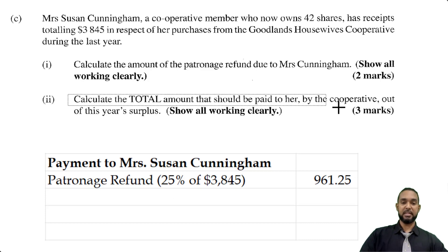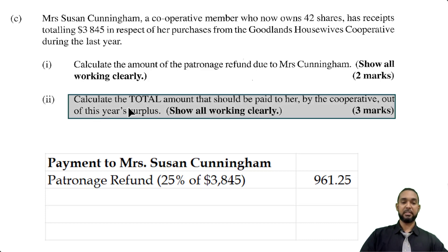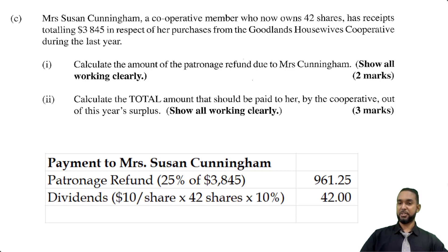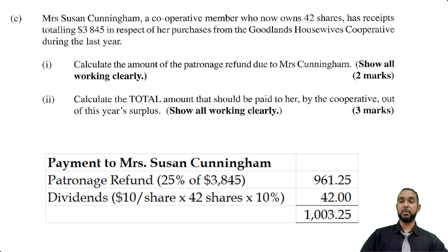The next part asks us to calculate the total amount that should be paid to her by the cooperative out of this year's surplus. The total amount is the sum of the patronage refund and her dividends. She owns 42 shares each at $10, and they're finding 10% of that value — 10 multiplied by 42 is $420, 10% of which is $42. When we add $961.25 to $42, we get $1,003.25.